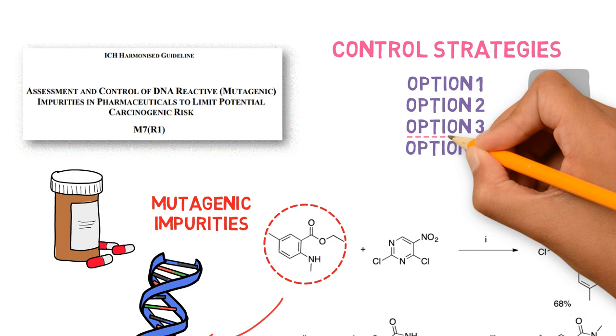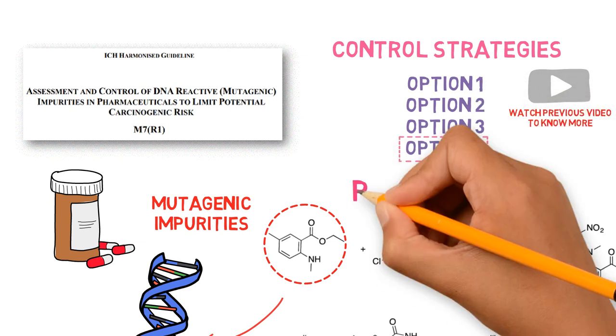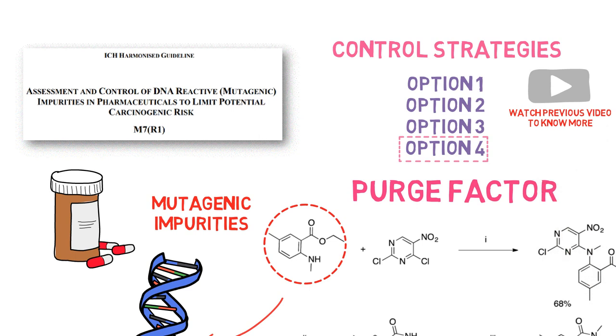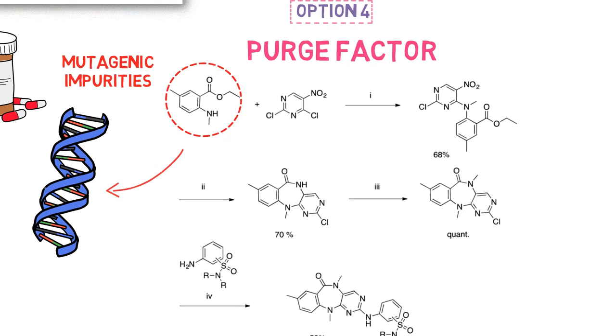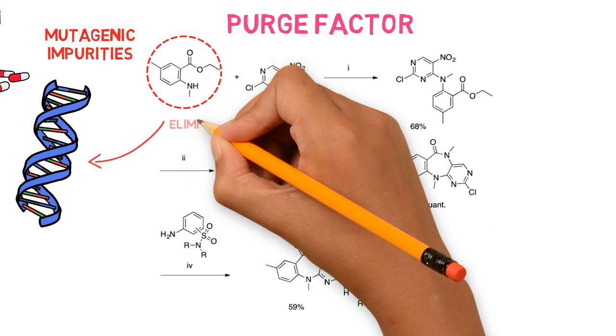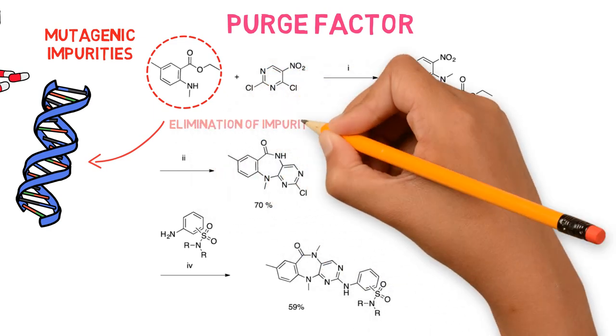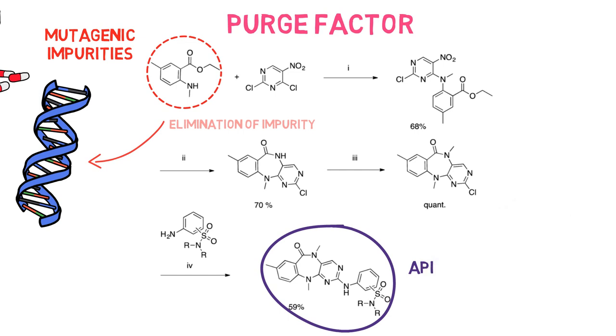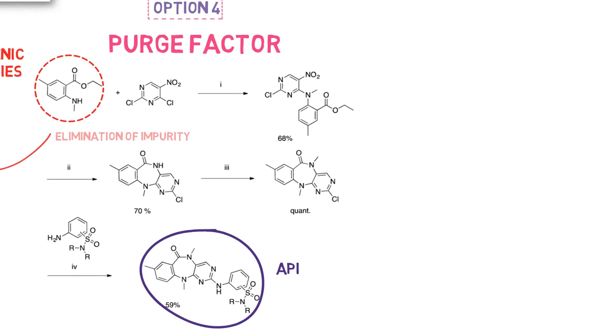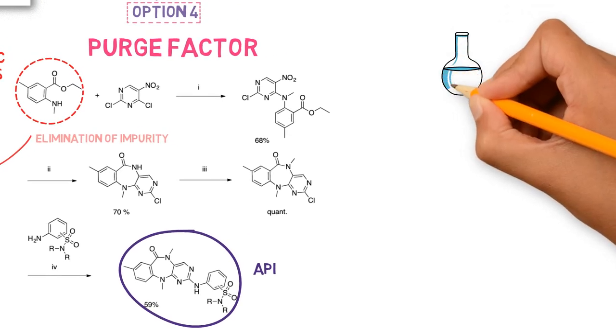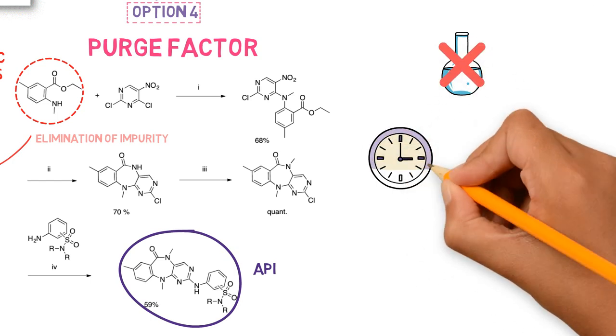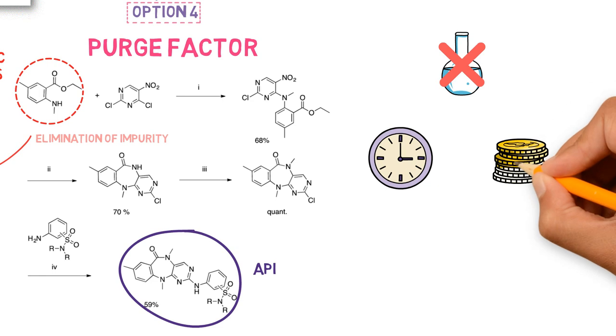Among them is option 4, which is where the purge factor concept is introduced. The purge factor is a calculation that shows the extent to which the manufacturing process is capable of eliminating a certain impurity, separating it from the API. When we can show a safe purge factor, we don't need to generate analytical data, which means many hours and resources can be saved by pharmaceutical companies.